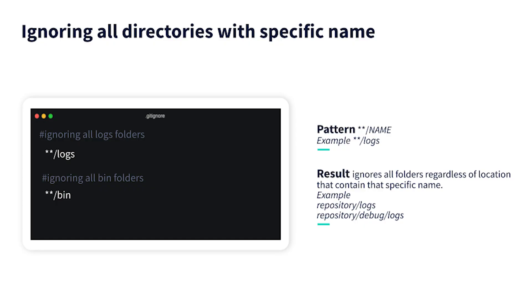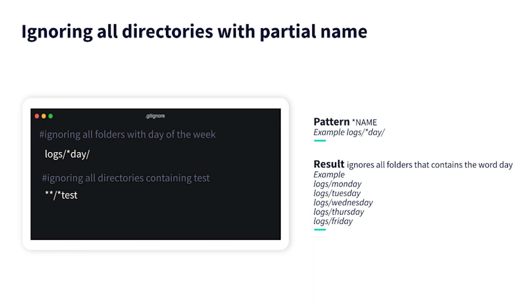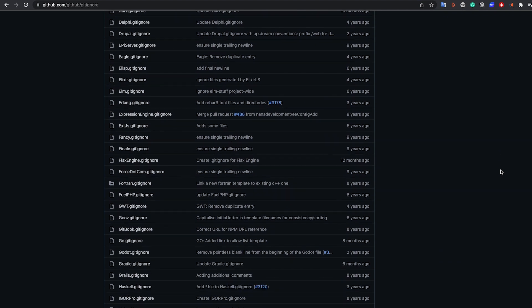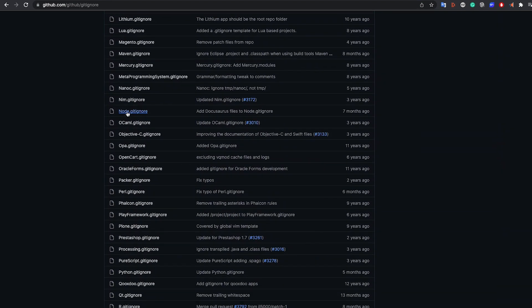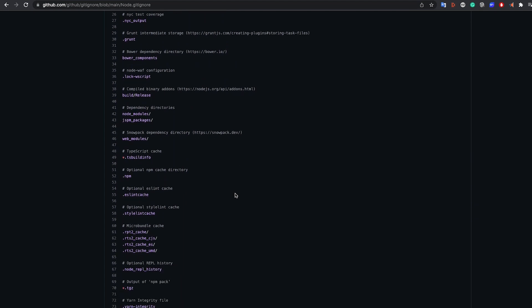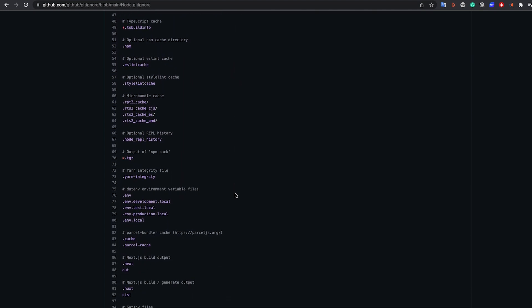We can also do lots more complicated things with .gitignore files. For instance, if we want to ignore not just one logs directory but every single directory named logs, we can do that using double asterisks. We can also use wildcard commands to match names — for instance, inside our logs folder, if I wanted to ignore every folder containing a day of the week, I could type logs/**day/. Now I'm ignoring logs like Monday, Wednesday, Thursday, and Friday inside that logs folder. There are lots more patterns and rules available, and you can find examples and useful templates on GitHub's website depending on your project type.